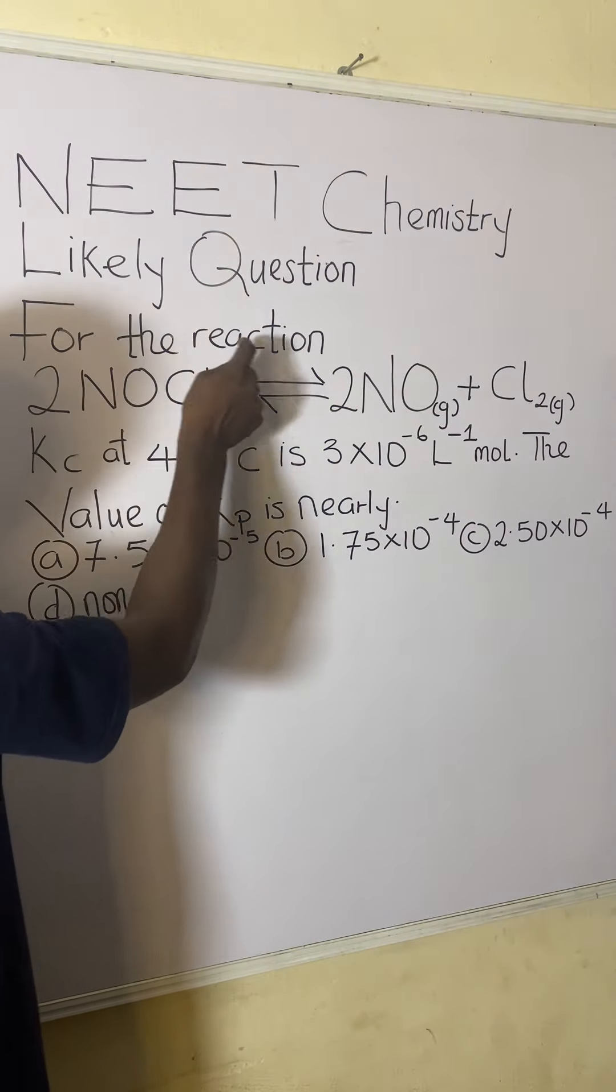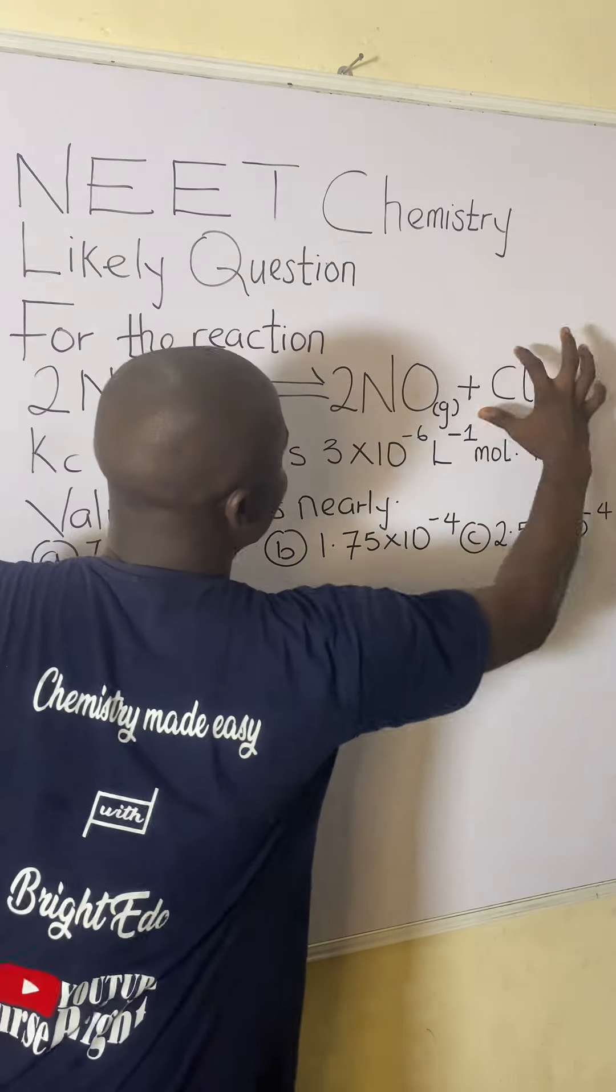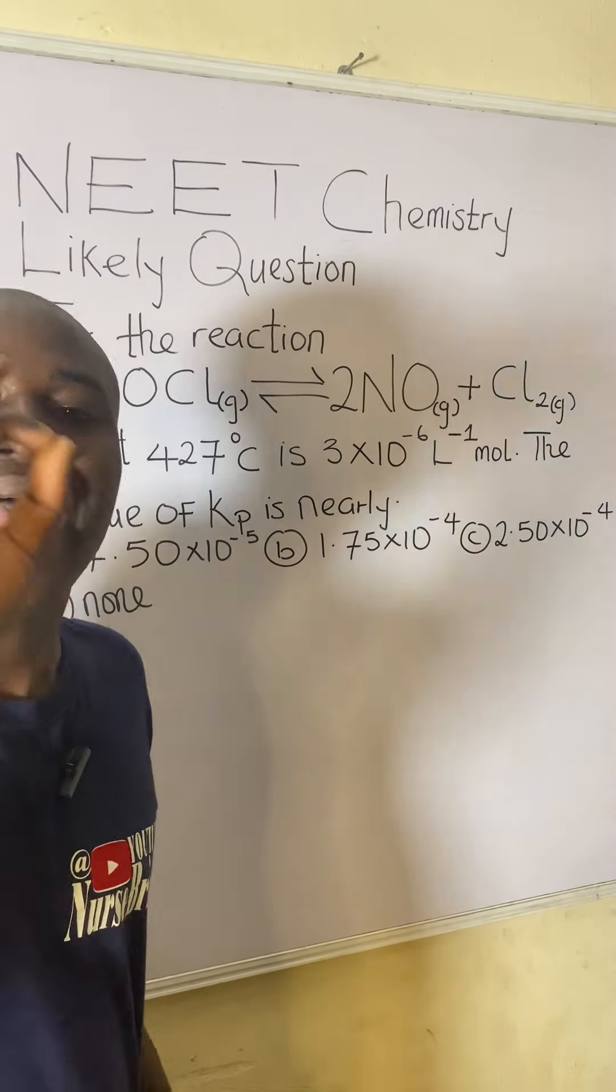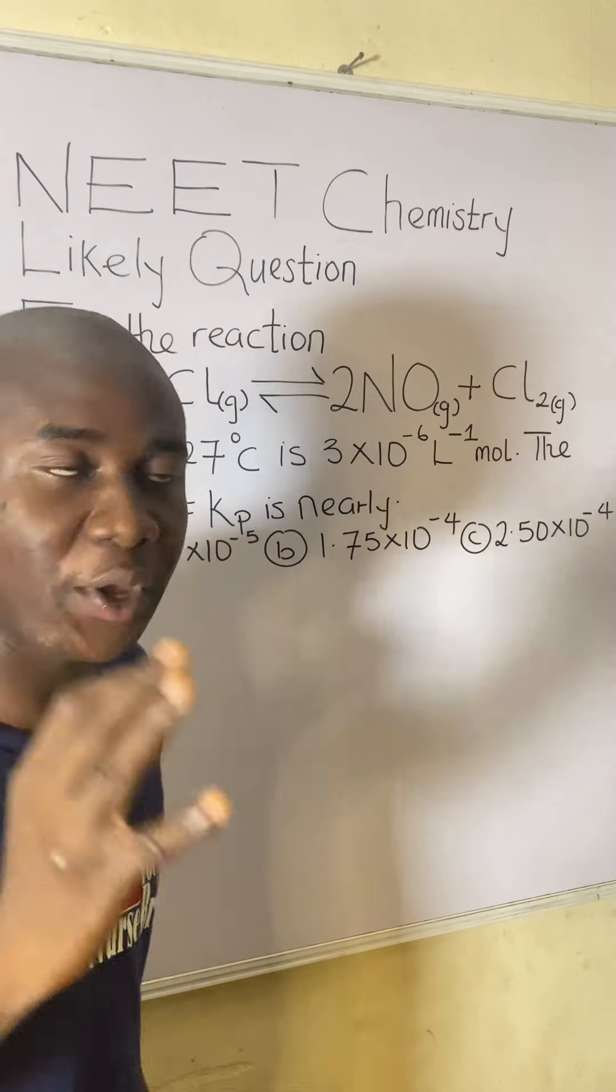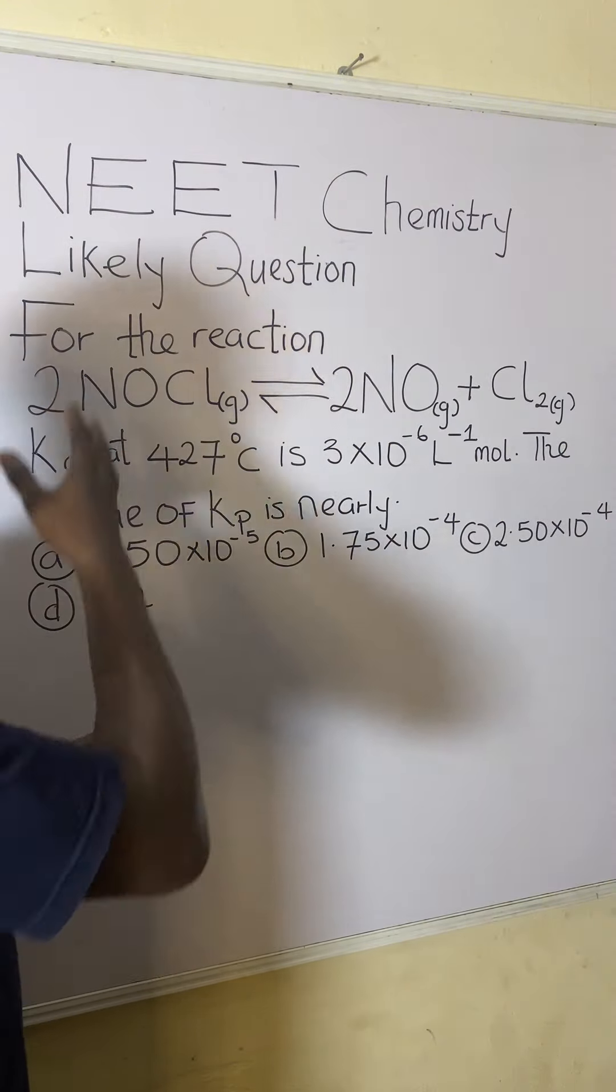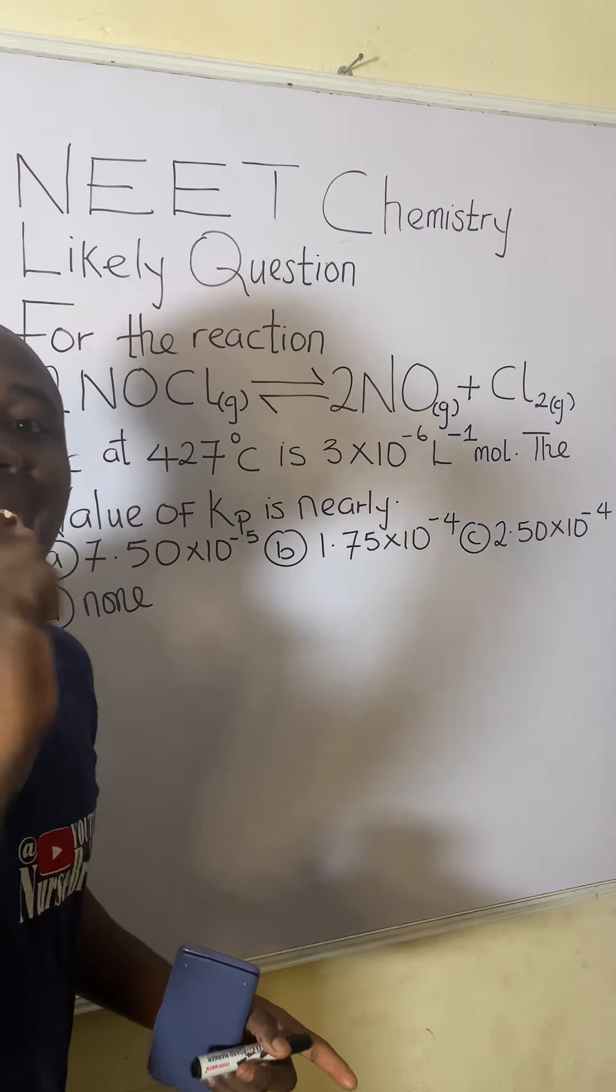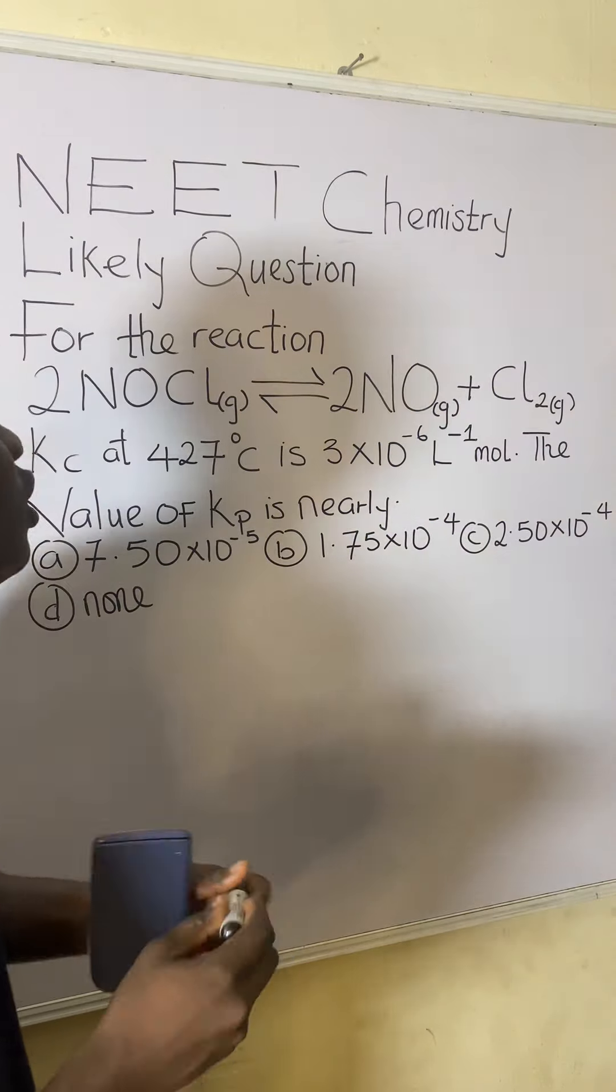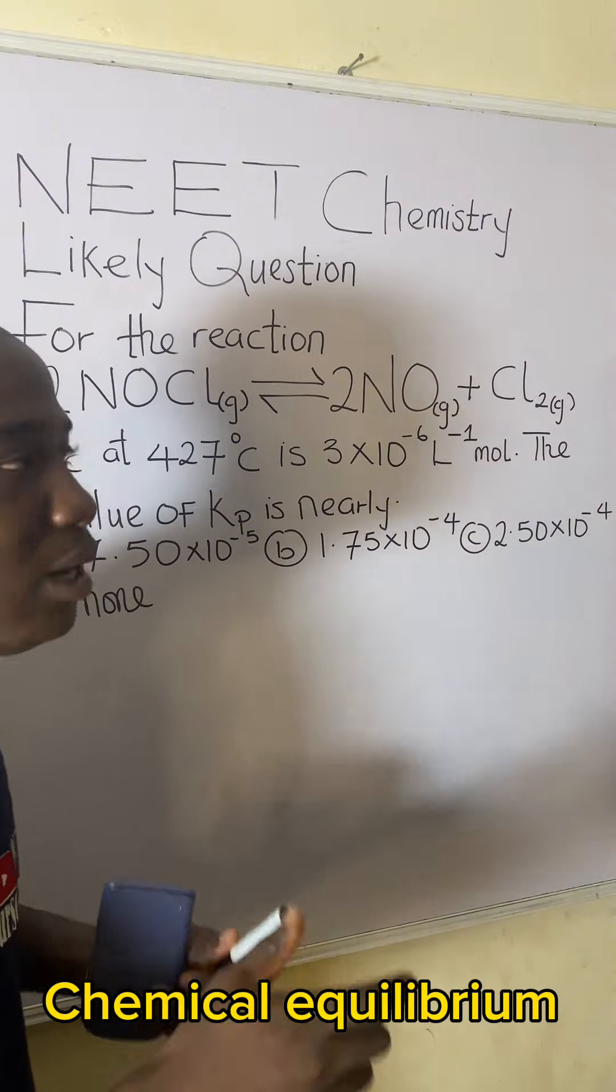The question says, for the reaction, this is the reaction. Now, first of all, looking at this question, I have to denote the topic to which this question is from. And from all what I'm seeing in this question, I already know that this question is from the topic in chemistry called chemical equilibrium.